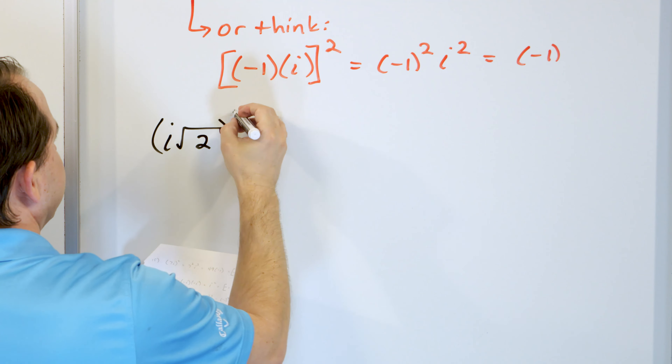What if we have i times the square root of 2, quantity squared? The square applies to the i and separately to the square root of 2. i squared gives negative 1, and the square cancels with the square root leaving just 2. So the result is negative 1 times 2, which equals negative 2. It's very important to write everything down to avoid sign errors.